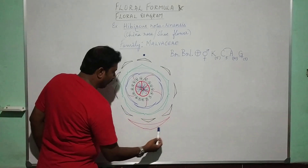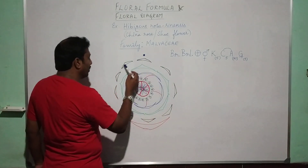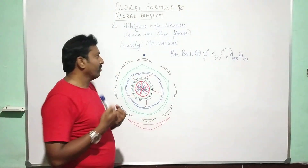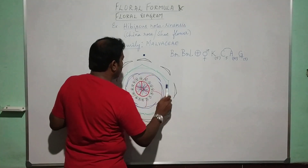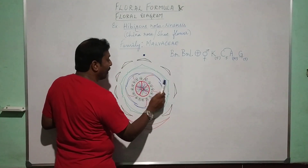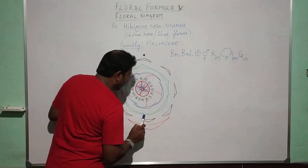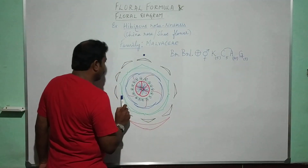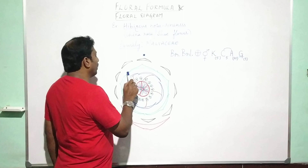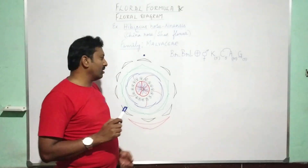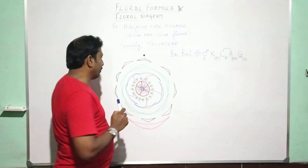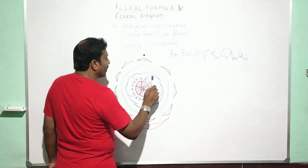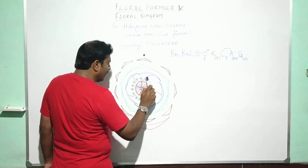Here we find the bract and these are the bracteoles, which are modified from the epicalyx — a whorl around the calyx. The calyx contains 5 sepals. These 5 sepals show valvate aestivation, without any overlapping of the margin, and you can also find joining or fusion of the margins with each other forming a gamosepalous structure.